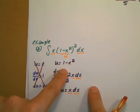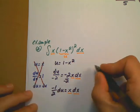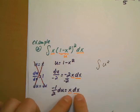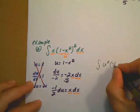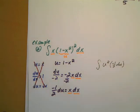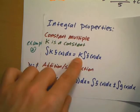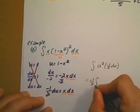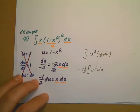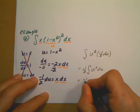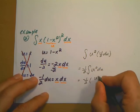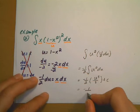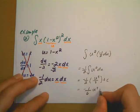I replace x dx with negative 1 half du, and the inside of the parentheses with u. So this integral becomes the integral of u squared times negative 1 half du. Using the constant property, I factor the negative 1 half out in front of the integral. Then applying the power rule: negative 1 half times u to the third over 3, plus C. Multiplying, that gives negative 1 over 6 times u cubed plus C.